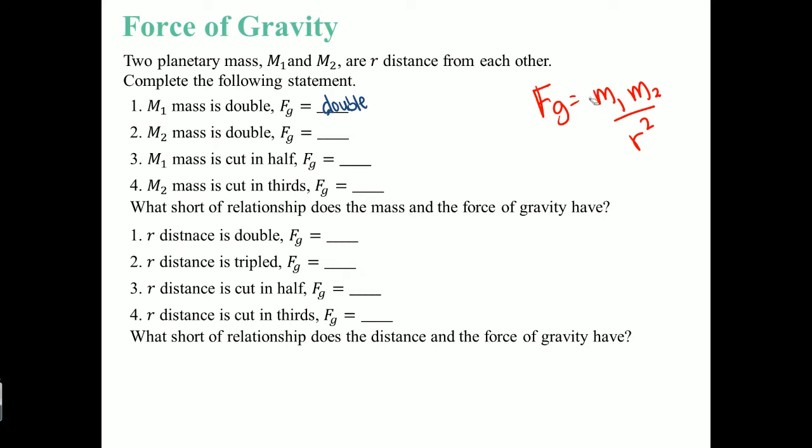If M1 doubles to the value 2, force of gravity also has to double, so this is also going to double. If M2 is going to double, force of gravity is also going to double as well. So if you double one of the masses, no matter which one, force of gravity is also going to double. What happens if you cut the mass in half? If you cut mass 1 in half, force of gravity is also going to be half.